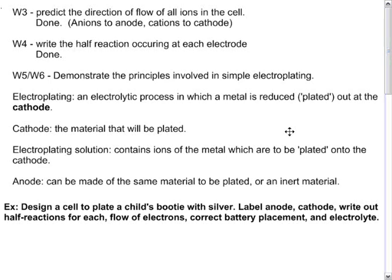This is part three of electrolytic cells for Chemistry 12: electroplating. We have already done predicting the flow of all ions in the cell and electrolytic cells in general, as well as the half reactions. Electroplating is using the electrolytic process to reduce a metal or plate it out at the cathode. The cathode remember is the one that usually gains in mass.